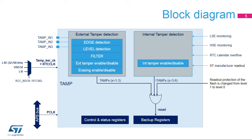Here is the TAMP block diagram. The TAMP has two clock sources. The TAMP clock or RTC clock is only used for tamper detection in level detection mode with filtering, and the APB clock is used for TAMP and backup registers read and write accesses. The TAMP clock can use either the High Speed External Oscillator or HSE divided by 32, the Low Speed External Oscillator or LSE, or the Low Speed Internal Oscillator or LSI. Only LSE or LSI are functional in stop and standby modes, and only LSE is functional in shutdown and VBAT modes.